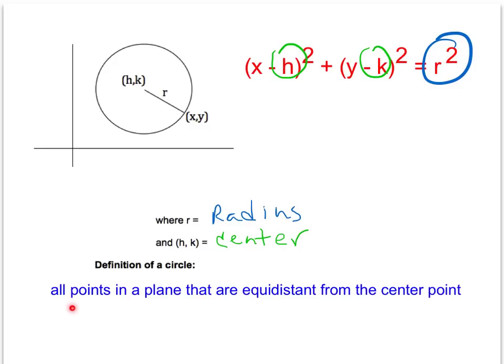And then you can write down in your notes the definition of a circle officially is all points in a plane that are equidistant from the center point, and that makes sense. Any point on this circle is going to be a distance of r from the center point.